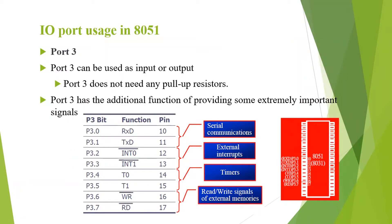Next is port 3. Port 3, similar to port 1, can be used as IO port — both as input port as well as output port. It doesn't need any pull-up resistors as in the case of port 0. Port 3 also has some additional functions, providing some important signals, from pin number 10 to 17.